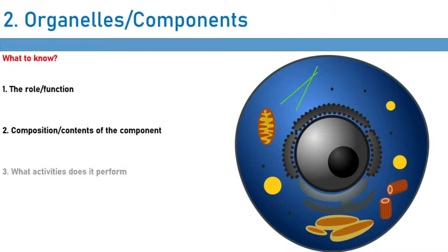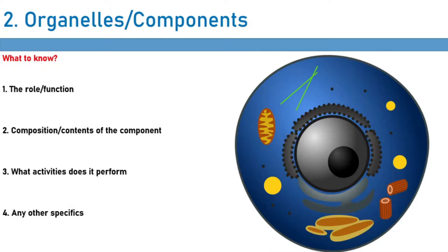We also want to know what activities go on in the actual organelle — things like transcription, translation, or DNA replication — because the IMAT can ask questions about this. And finally, we want to know any niche or unique properties of the organelle. Now we can finally begin dissecting a eukaryotic cell, covering these four things for all organelles and cellular components relevant for the IMAT.